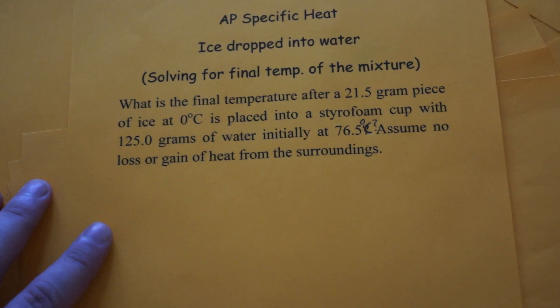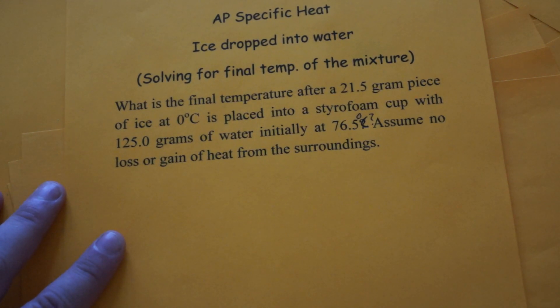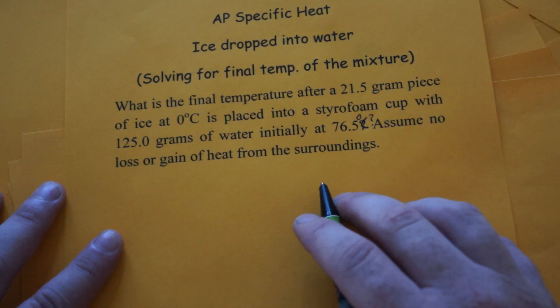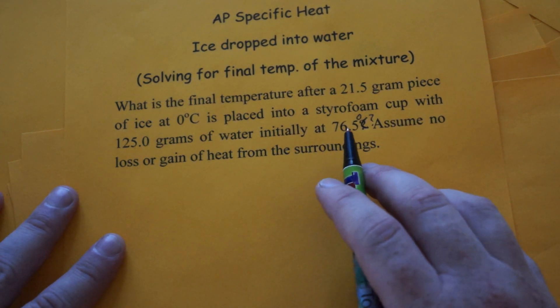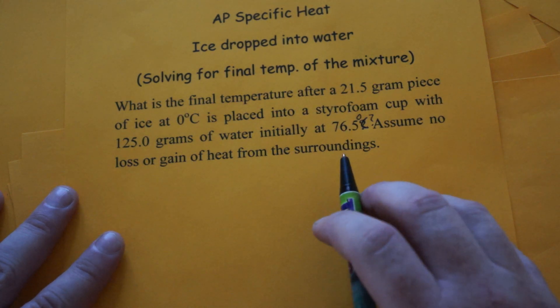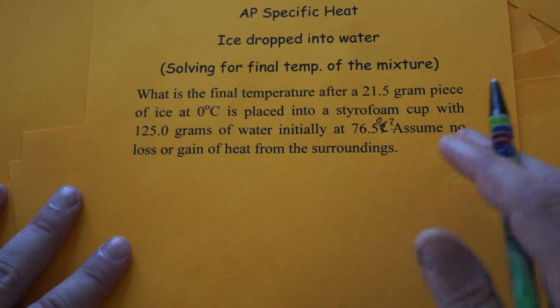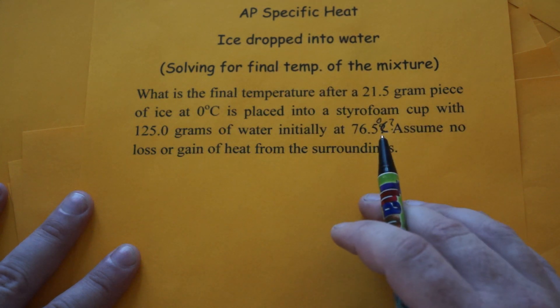There are two outcomes that could possibly happen. The ice could completely melt and then the water temperature would just be lowered, or the water goes down to zero degrees and the ice partially melts. So what we have to do is we have to figure out which situation is going to happen.